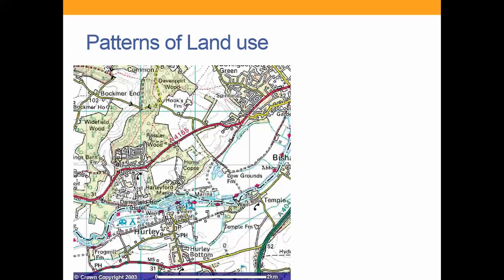Last but not least, we've got patterns of land use. Patterns of land use allows you to refer to anything on the map. One thing to remember is that white areas aren't empty — very often that's farmland. So to describe the pattern of land use here: there is settlement in the north east of the map around Spinfield, a settlement around Hurley which is south of the river, and a settlement just north of the river focused on the B4155. All of the woodland is located in the north west of the map, including Davenport Wood, Razzler Wood, and Widefield Wood.